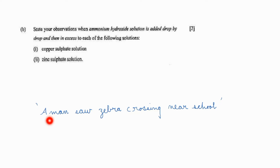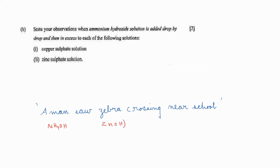See this shortcut for ammonium hydroxide: 'Amman so zebra crossing near school.' When excess of ammonium hydroxide is added, zinc hydroxide as well as copper hydroxide will become soluble — 'School' means soluble. That is the meaning of this shortcut, which we have discussed.